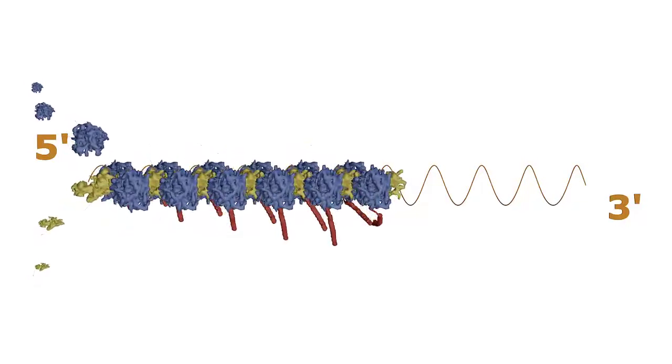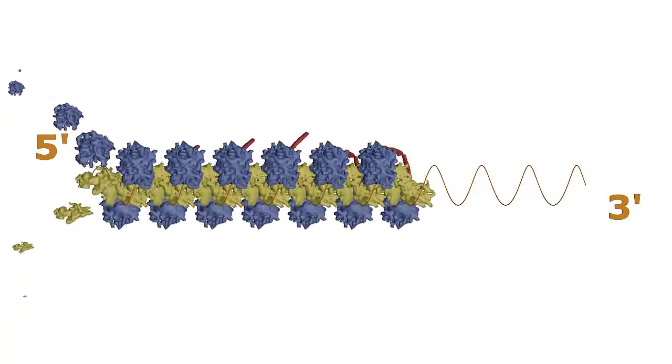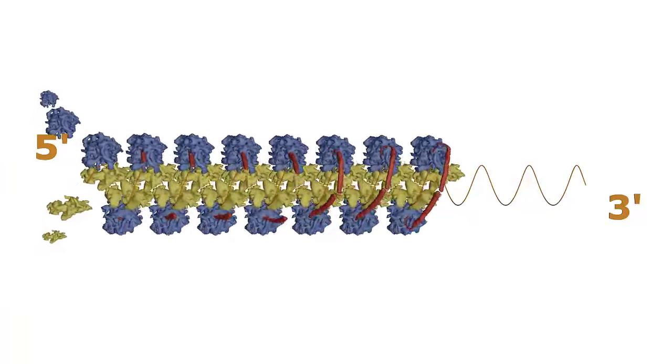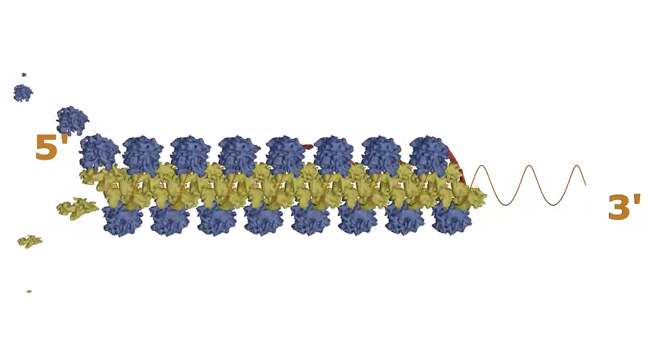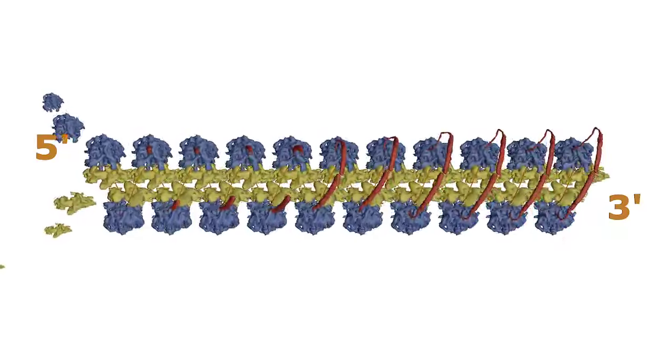When about half of the MVP chain is produced, it's long enough to make contact with the growing MVP chain emerging from the ribosome moving along just behind it, forming a dimer. Behind the first dimer, there's another dimer that is formed, and beyond that dimer, yet another dimer forms.